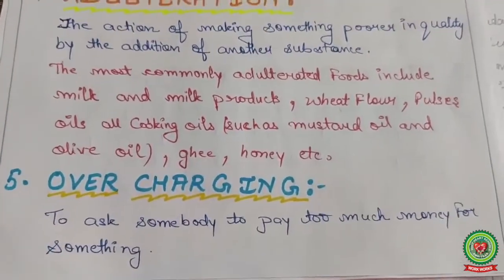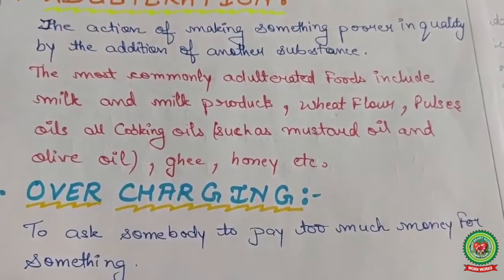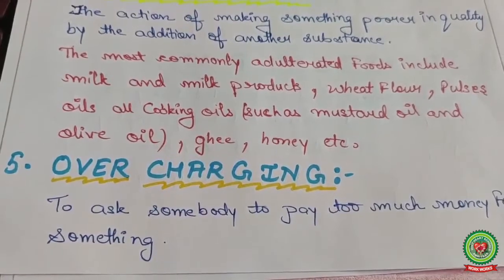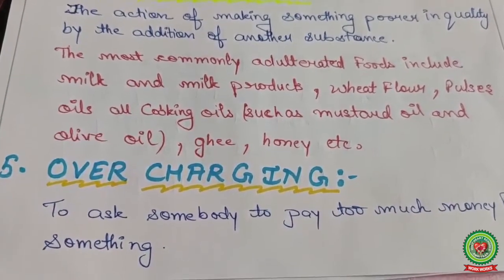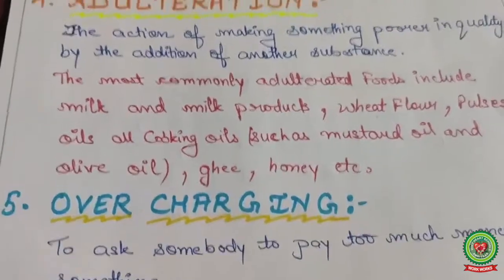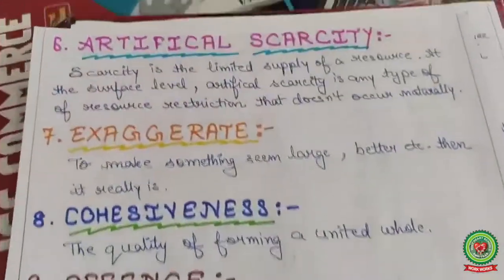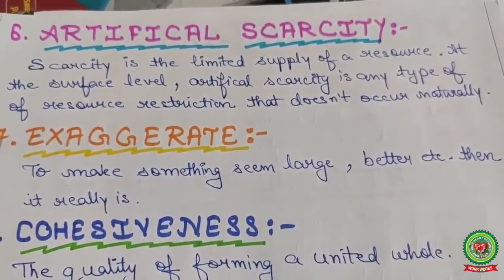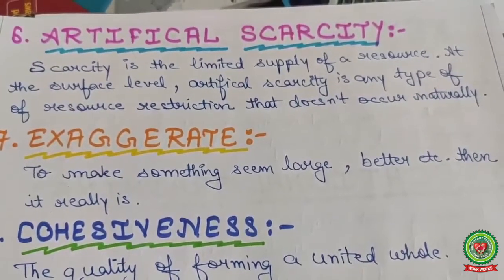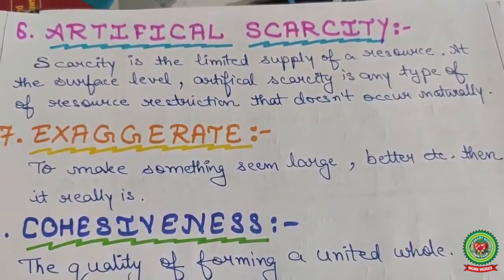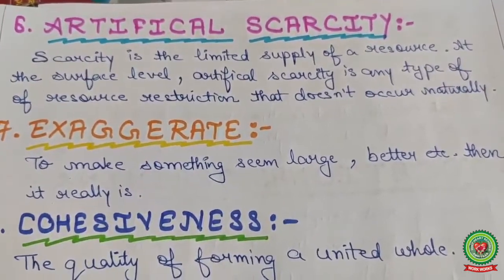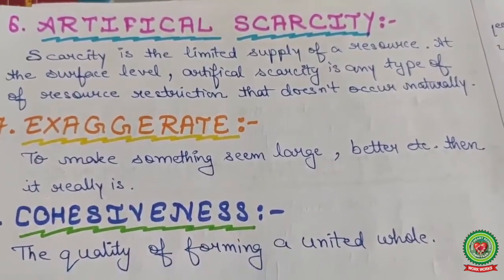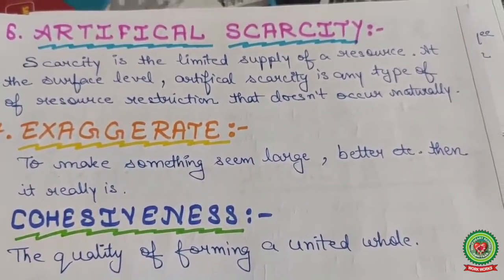Fifth keyword: overcharging — to ask somebody to pay too much money for something. For example, if the MRP is 110 but the seller charges 120, that is overcharging. Sixth keyword: artificial scarcity — any restriction on the supply of resources that does not occur naturally. For example, hoarding by a seller so that a situation of artificial scarcity is created in the market.